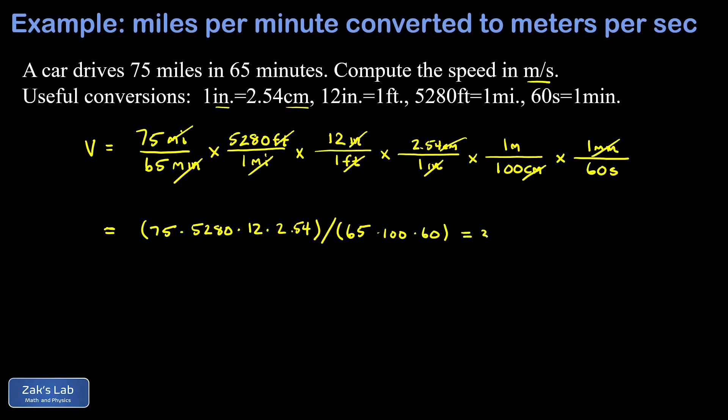When we run the numbers we get 30.948 meters per second. Because we were given the original numbers to two significant digits, we should round the answer to two significant digits, so that's going to be 31 meters per second and we're done.